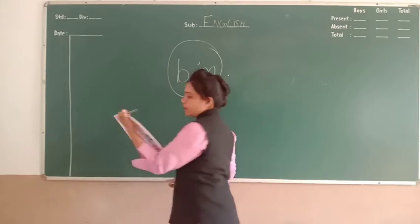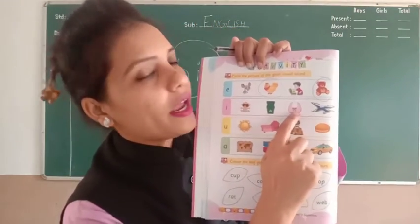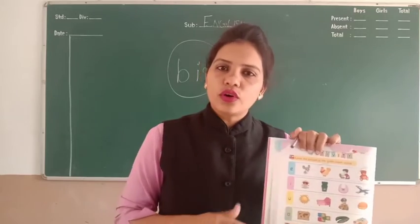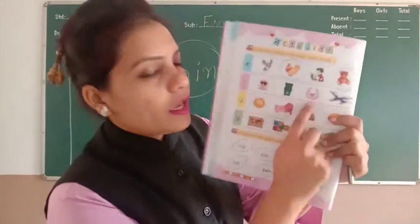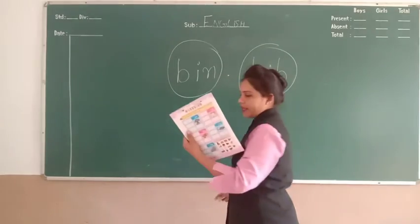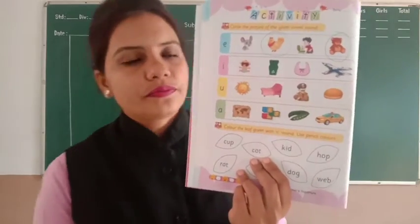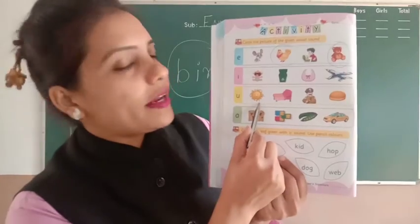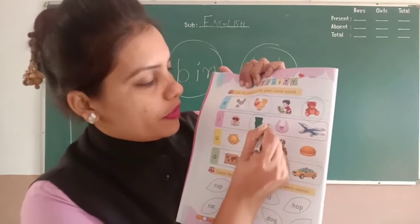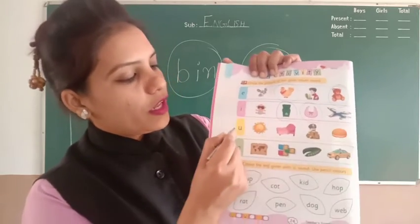उसके बाद है - यह newborn baby को गले में जो पहनाते हैं, उसको bib बोलते हैं। B-I-B - तो bib का I sound है। तो bin और bib दोनों पे circle करेंगे। फिर यहाँ पे है U sound।